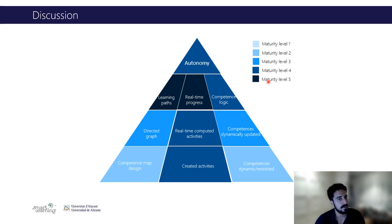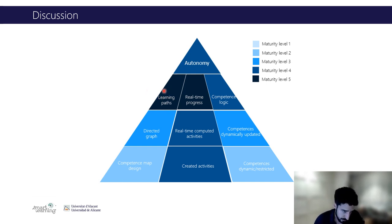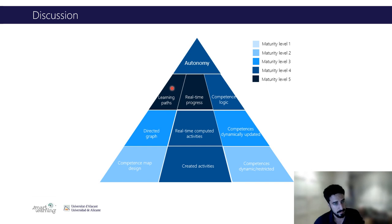The components are represented by different maturity levels. This maturity level represents how each component is fulfilled. For example, for this concrete component that is part of the autonomy principle, we have learning paths at the model level — that is, at the maximum maturity level.